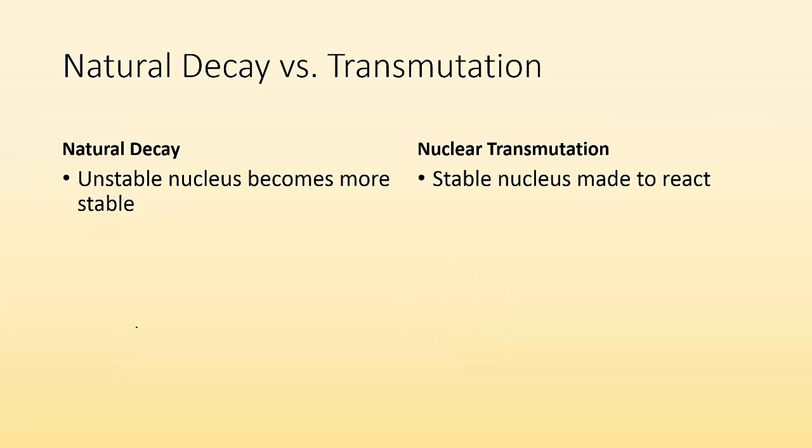So natural decay versus transmutation, what's the difference? Well, in natural decay, we have an unstable nucleus becoming more stable by emitting off one thing, right?